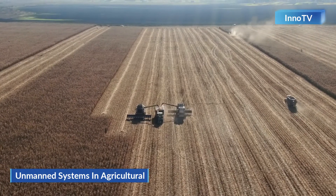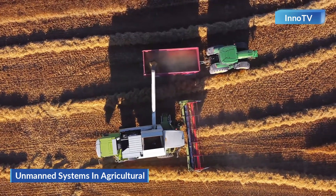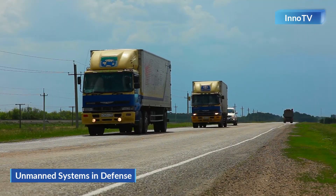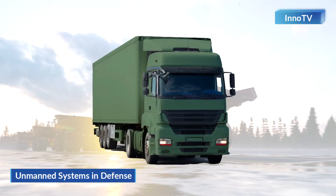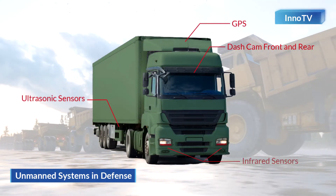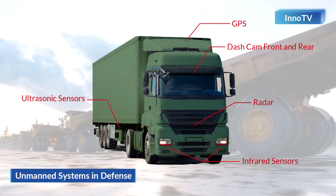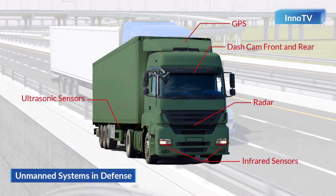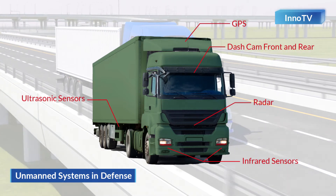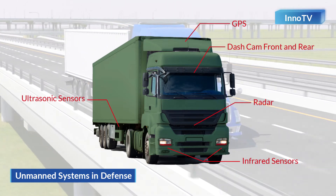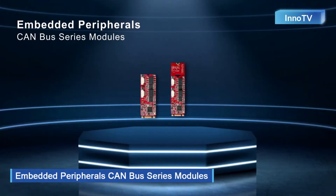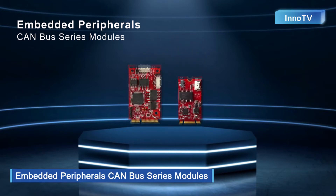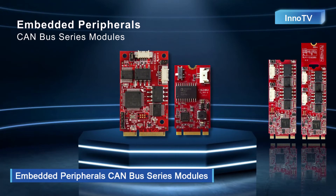CAN bus is also an important communication protocol for modern agriculture, and we will introduce a success case of unmanned agricultural machinery later. In the defense area, autonomous driving vehicles must be prepared for critical conditions in every kind of environment. CAN bus provides high performance and excellent reliability communication between LiDAR for creating 3D maps, infrared cameras for obstacle detection, and GPS for navigation. CAN bus has been widely used in various industries, especially for in-vehicle, industrial automation, smart agriculture, and logistics.